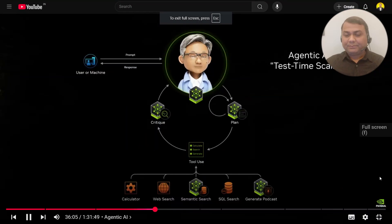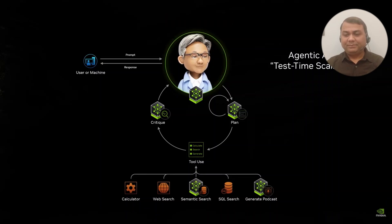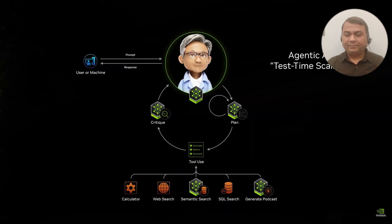One of the most important things happening in enterprise is agentic AI. Agentic AI is basically a perfect example of test-time scaling. AI is a system of models — some of it is understanding and interacting with the customer or user, some of it is retrieving information from storage, a semantic AI system like a RAG.